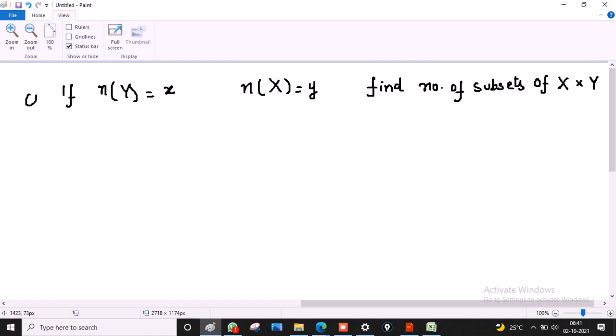Yes, now you can give the direct answer. So number of subsets of X cross Y can be written directly as 2 raised to power xy.